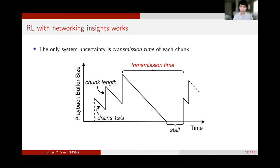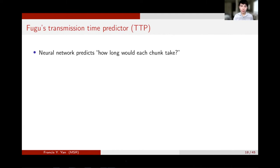Next, I'm going to describe how exactly we used RL to tackle this problem and how we worked around the sim-to-real gap. The first step we took was to understand the system dynamics better. I won't go into detail of this figure, but if we plot how the playback buffer size on a client evolves over time, we'll see the only uncertainty in ABR is the transmission time of a video chunk. That is simply how long does it take for a client to receive a video chunk since the chunk left the sender. That is transmission time, and that's the only system uncertainty.